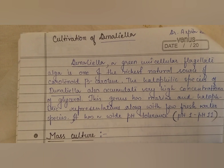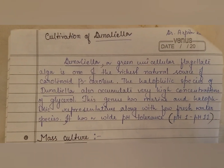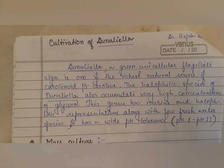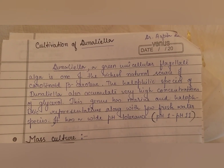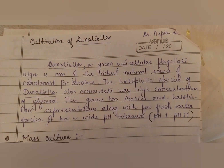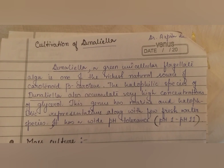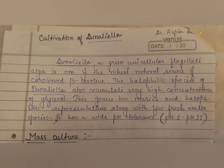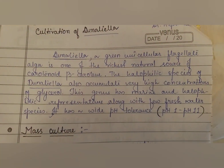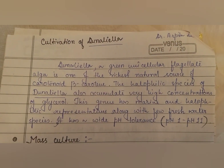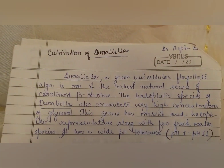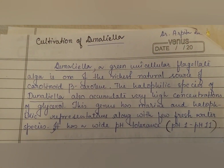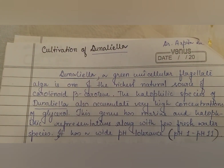The basic plan for cultivation of dunaliella is also similar. Dunaliella is a green unicellular flagellate alga and one of the richest natural sources of carotenoid, that is, beta carotene. The halophilic species of dunaliella also accumulate very high concentrations of glycerol. This genus has marine and halophilic representatives along with a few freshwater species.